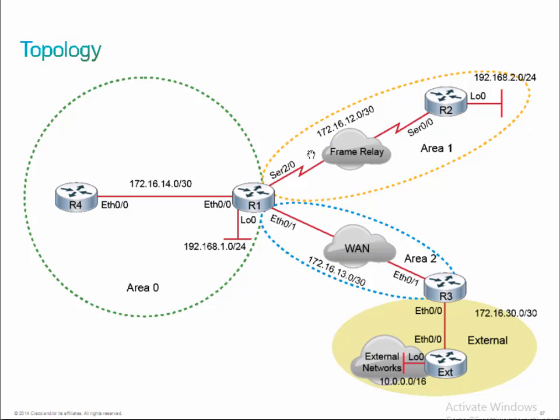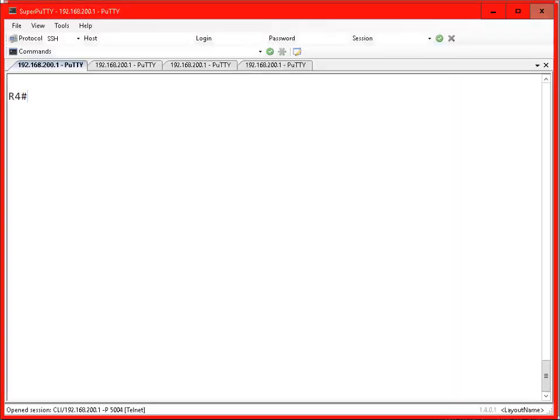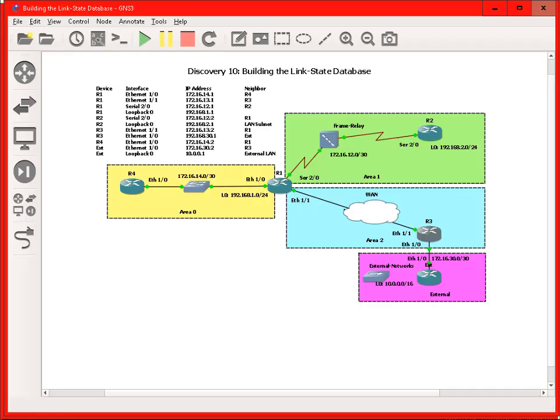That's the extent of what you'd have to do with a topology on the ROUTE exam — they might give you a diagram and say, identify what types of LSAs you might see. So let's pause and get the discovery loaded, then we'll go into this discovery and analyze the database in a lot more detail. We've got the discovery loaded up: R1 is an ABR in our topology, so it's going to have type 1 LSAs representing every route in the network.